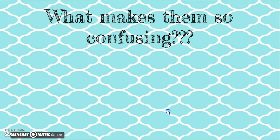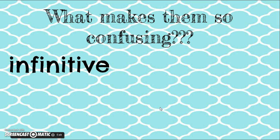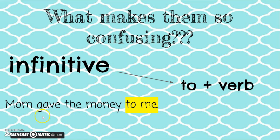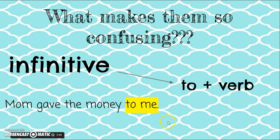Another thing that confuses prepositional phrases is when you see an infinitive. An infinitive looks a lot like a prepositional phrase because it starts with the same word: 'to.' An infinitive, though, is 'to' plus a verb, so you really have to understand the difference between a noun and a verb. In the sentence 'Mom gave the money to me,' I have to look at the word that comes after 'to' and think: is that a verb or is that a noun or pronoun? 'Me' is a pronoun. Can you 'me'? That's not an action — it's not a verb.